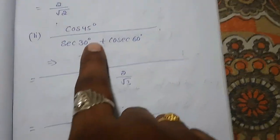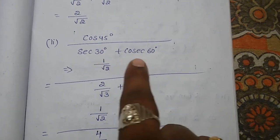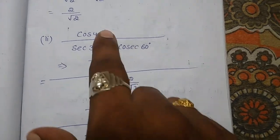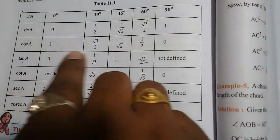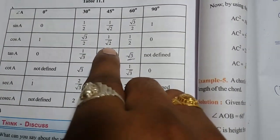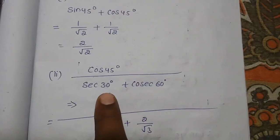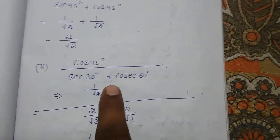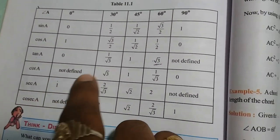Second question: cos 45° by secant 30° plus cosecant 60°. Cos 45° is nothing but 1 by root 2. Here is cos 45°, its value is 1 by root 2. Substitute that value in our problem. Again secant 30°, that is nothing but 2 by root 3.